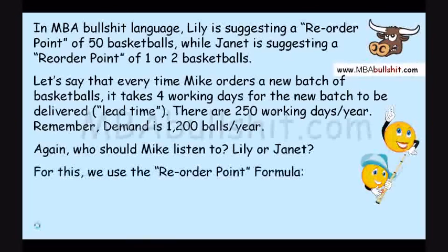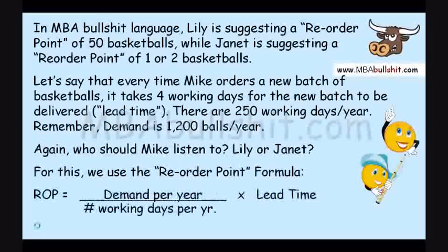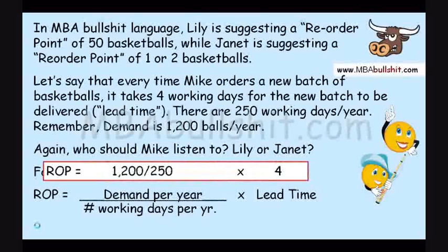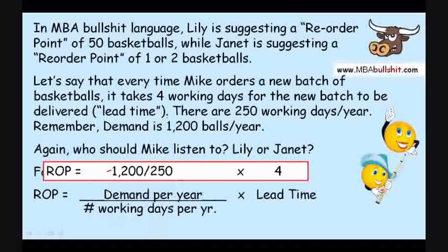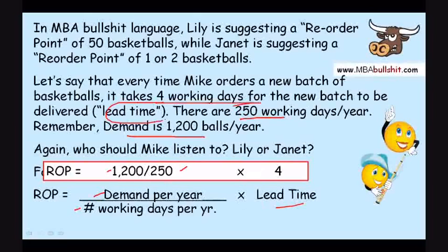For this, we use the reorder point formula, which is very simple: reorder point equals the demand per year divided by the working days per year, multiplied by the lead time. So plugging in the figures: 1200 demand per year, divided by 250 working days per year, multiplied by the lead time of four working days.